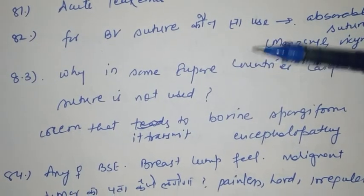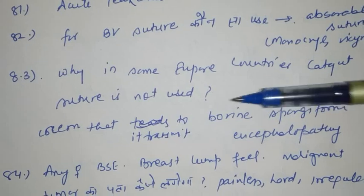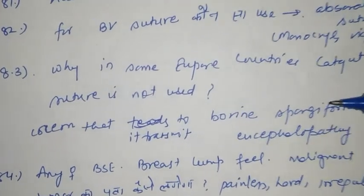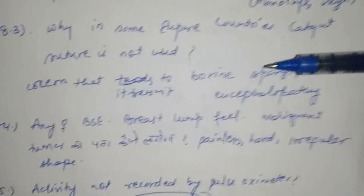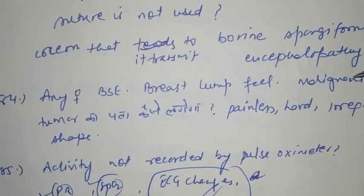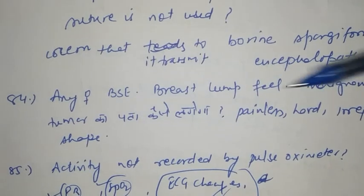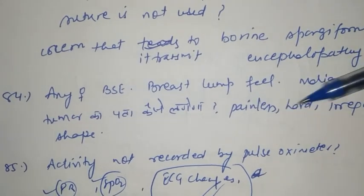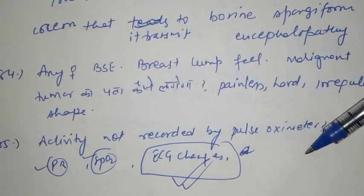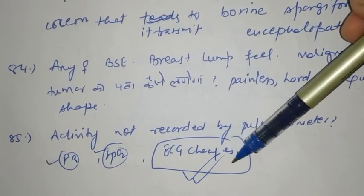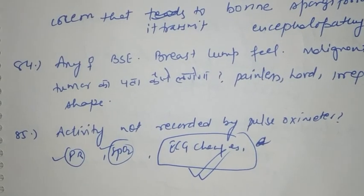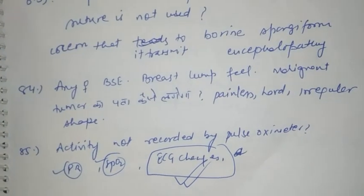For blood vessels, the suture used is absorbable suture — this includes monocryl, vicryl, etc. In some European countries, cat-gut suture is not used because they believe it transmits bovine spongiform encephalopathy. If a female performs BSE and feels a breast lump, it may be identified as malignant if it is painless, hard, and irregular in shape.